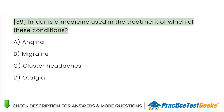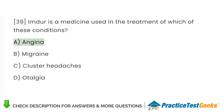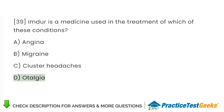Midrin is a medicine used in the treatment of which of these conditions? A. Angina. B. Migraine. C. Cluster headaches. D. Otalgia.